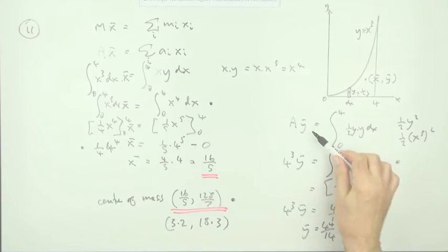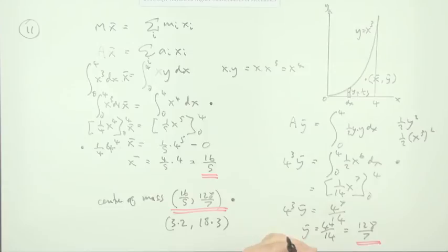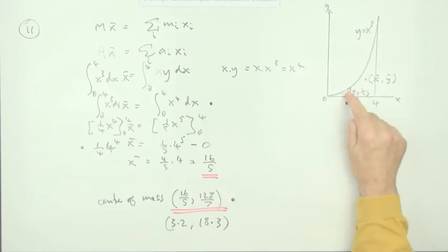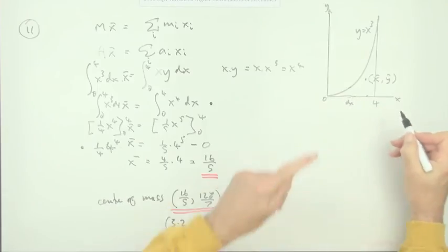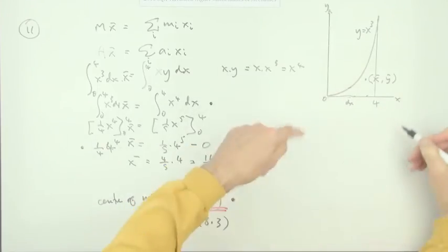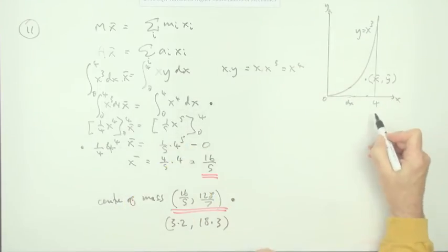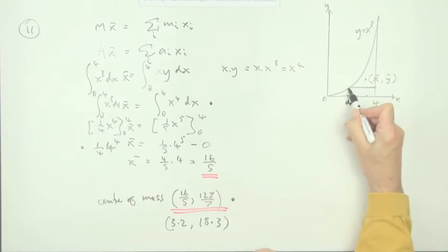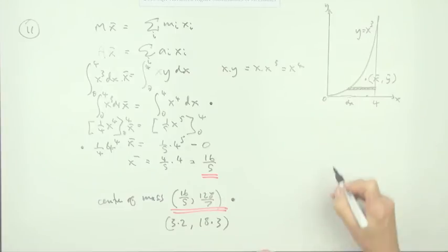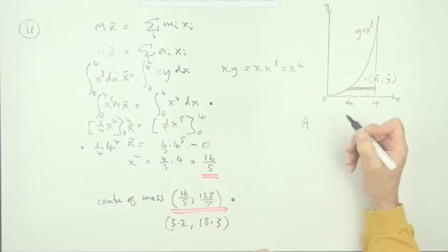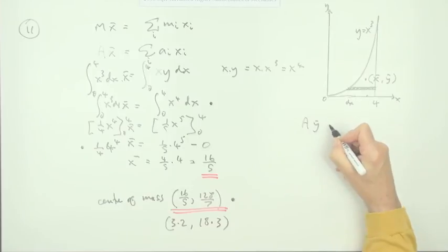There was an alternative way of finding the y-coordinate of that center of mass. And that would have been, instead of taking those vertical strips, since you're rotating it around, or taking moments rather, about the x-axis, you could consider horizontal strips. And then it would be the same principle. It would be the area, since we're dividing out that constant, times ȳ